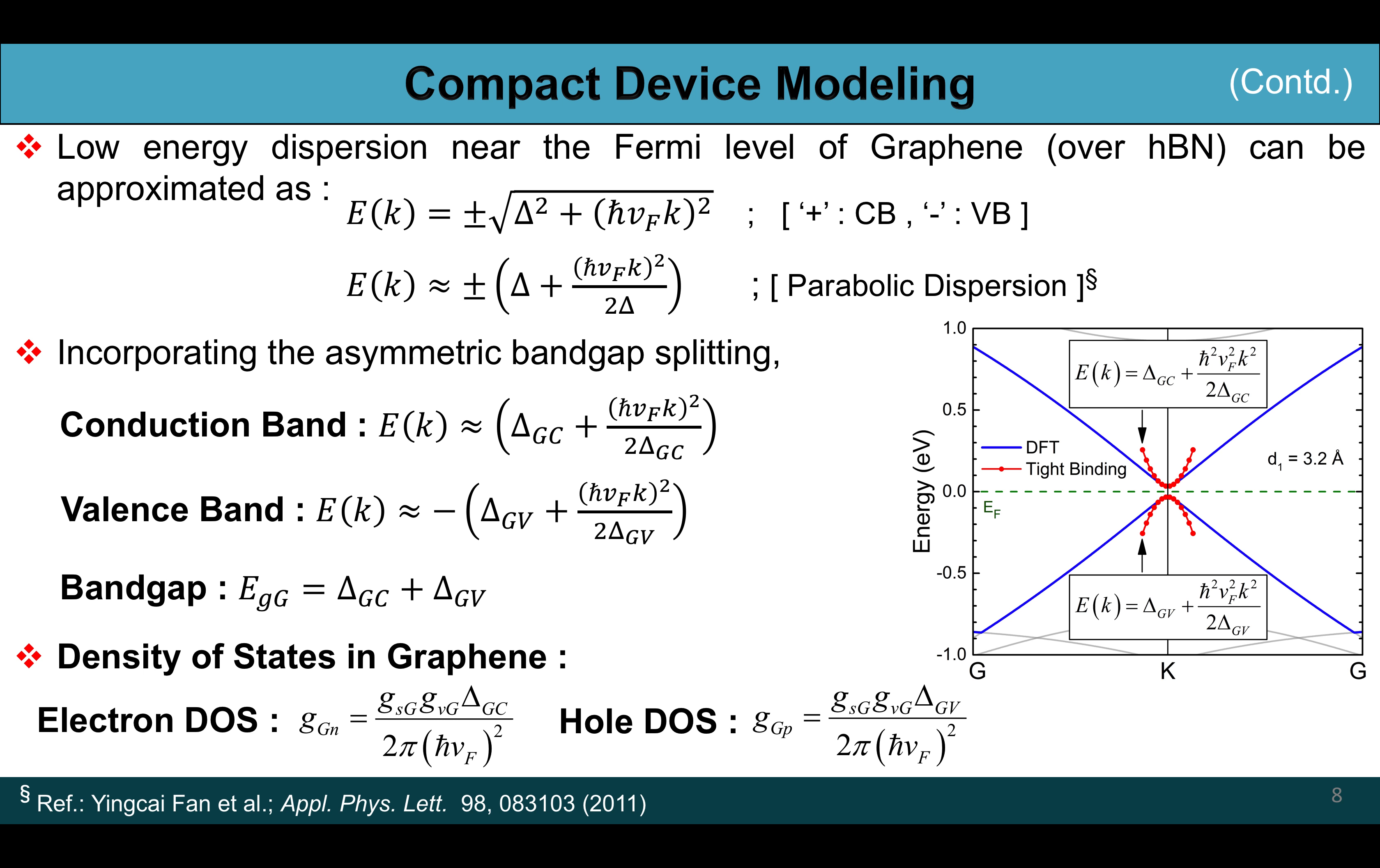Now this is the compact device modeling. The low energy dispersion near the Fermi level of graphene which is placed on top of hBN can be approximated as E(k) equal to plus minus square root of delta squared plus h-bar vF k whole squared. Here plus signifies conduction band and minus signifies the valence band. Under parabolic approximation it becomes E(k) equal to plus minus delta plus h-bar vF k whole squared by 2 delta.